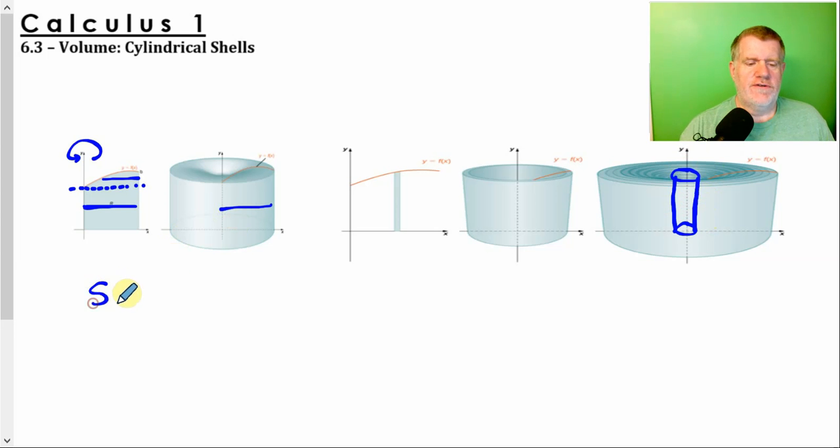Remember the lateral surface area of a cylinder was 2πrh. 2πr being the circumference of the circle, h being the height. So if you took out a cylinder and you cut it apart and laid it down, then this distance here would be 2πr, which is the circumference of the circle, and this would be the height.